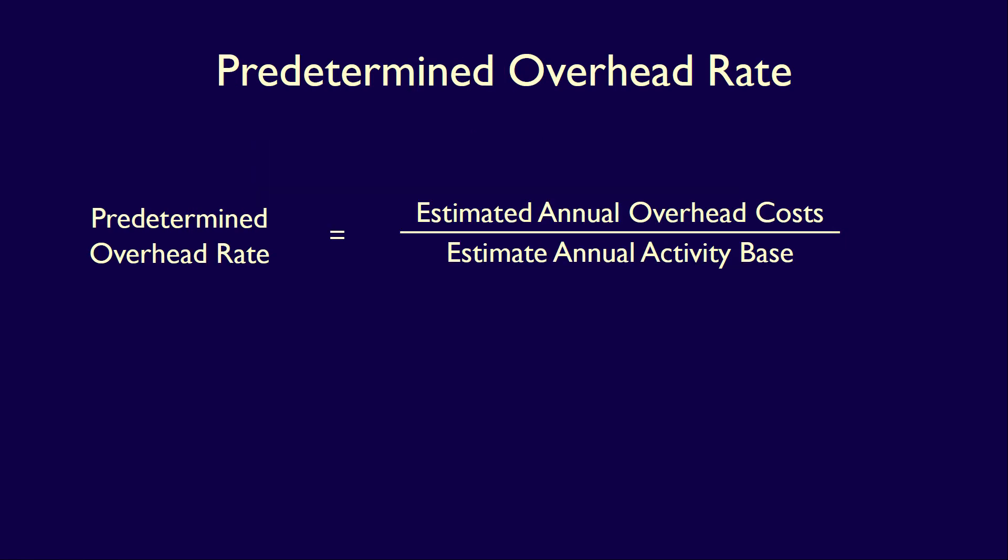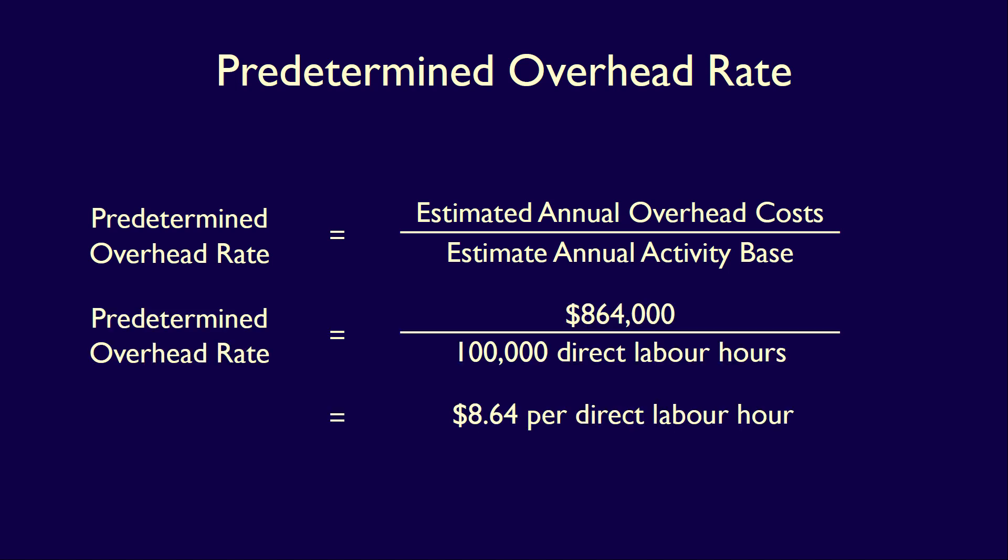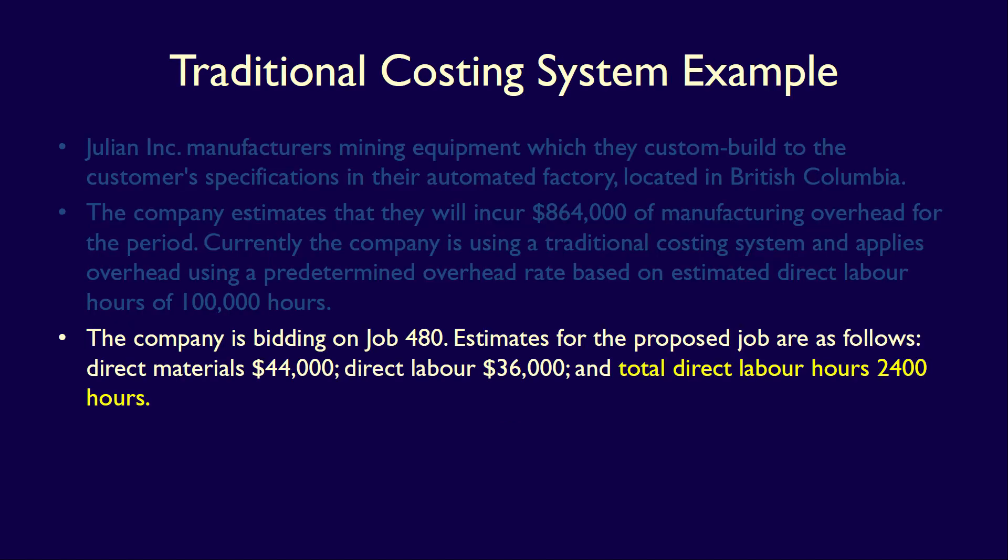The formula for the plant-wide rate is estimated annual manufacturing overhead divided by estimated annual activity base. The estimated annual manufacturing overhead for Julian Inc. is $864,000. The company uses direct labor hours as their activity base: 100,000 hours. $864,000 divided by 100,000 hours equals $8.64 per direct labor hour. This is the predetermined overhead rate, also called the plant-wide rate, and we can now apply it to Job 480.